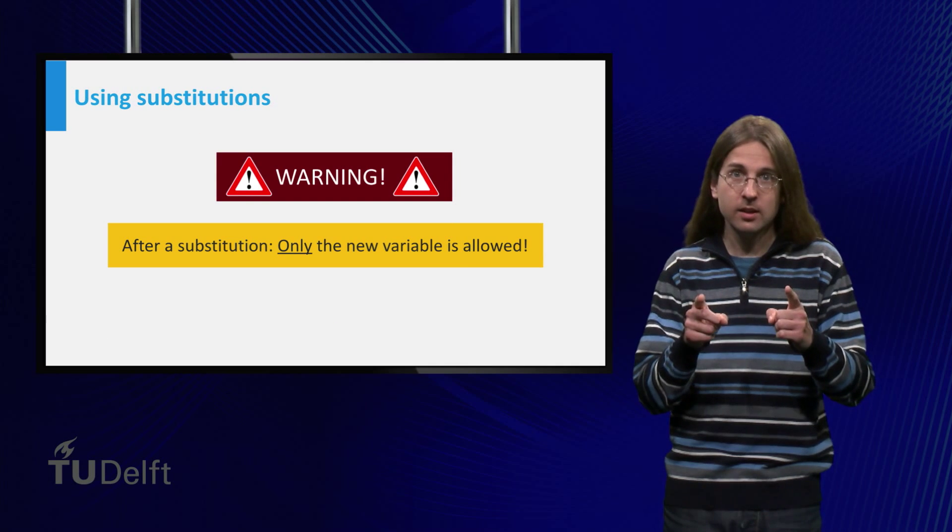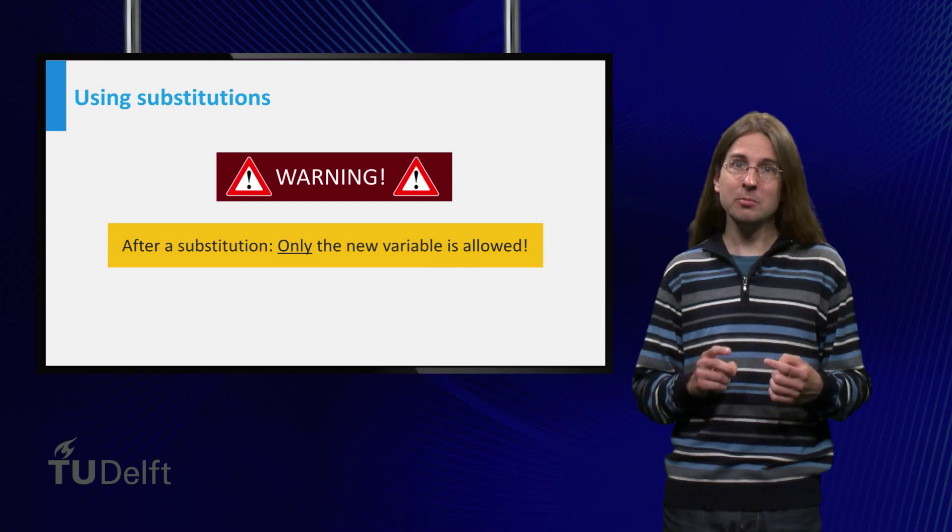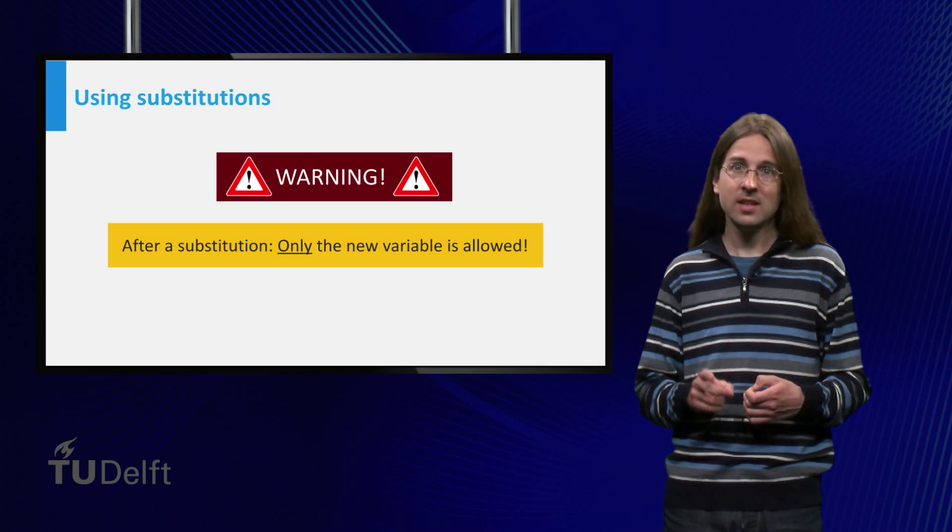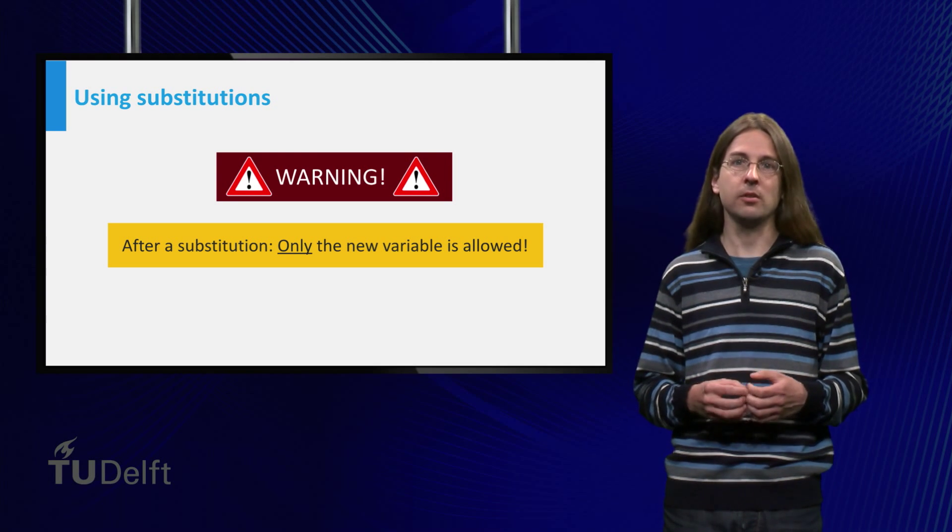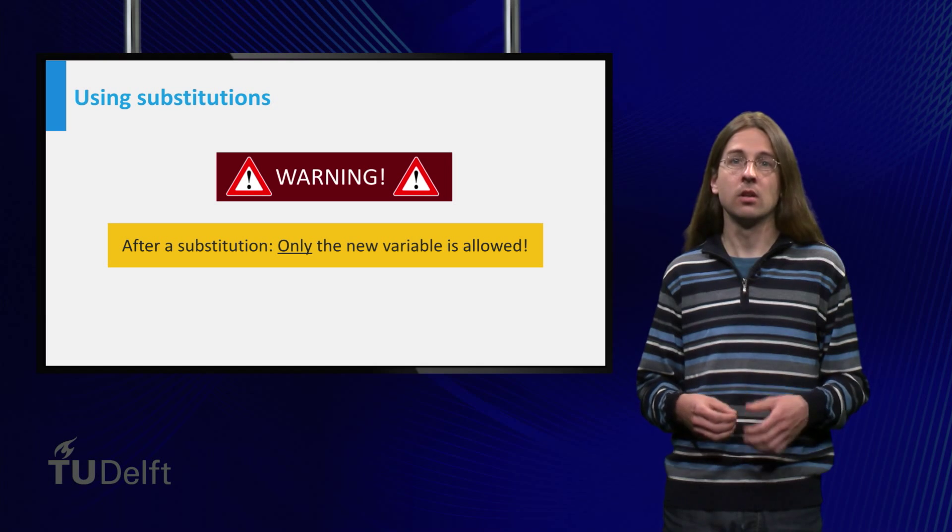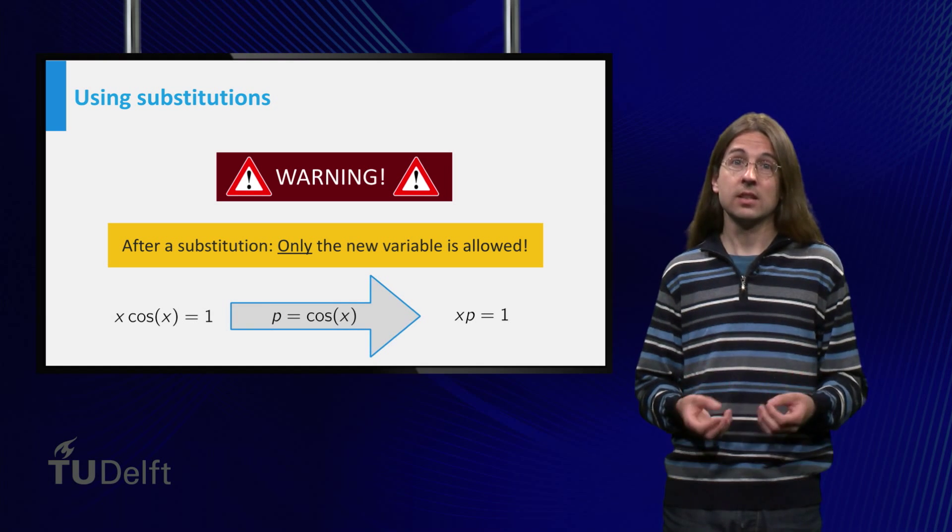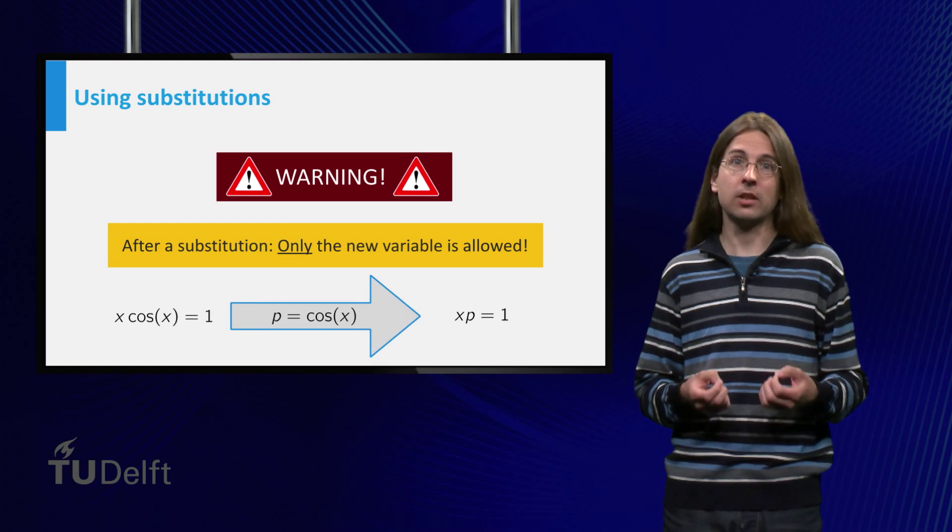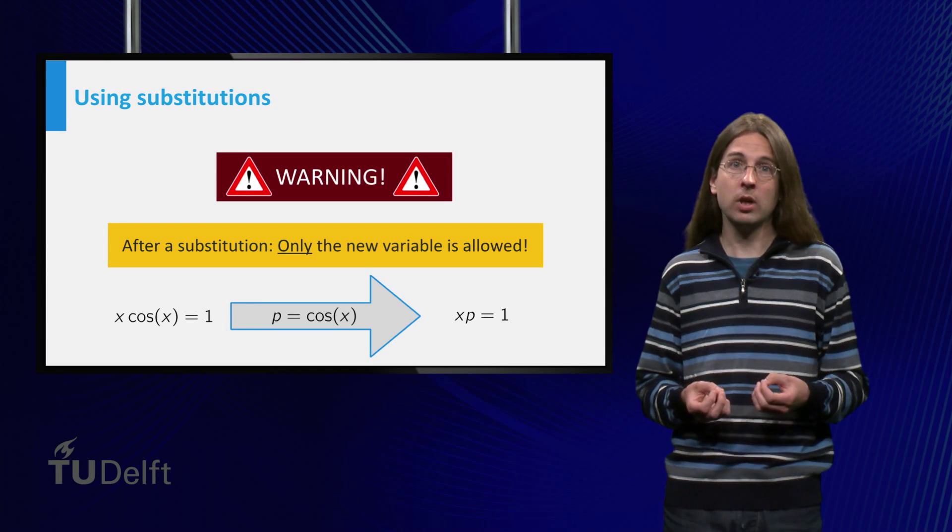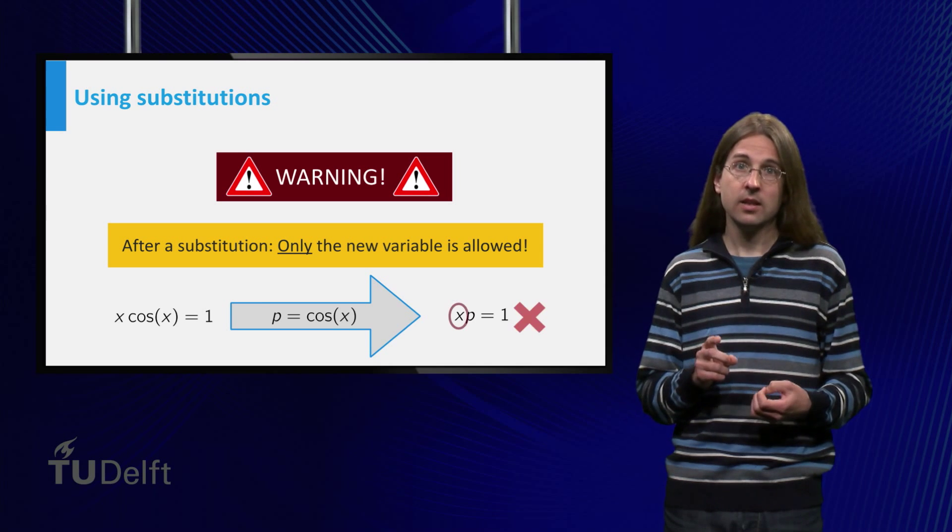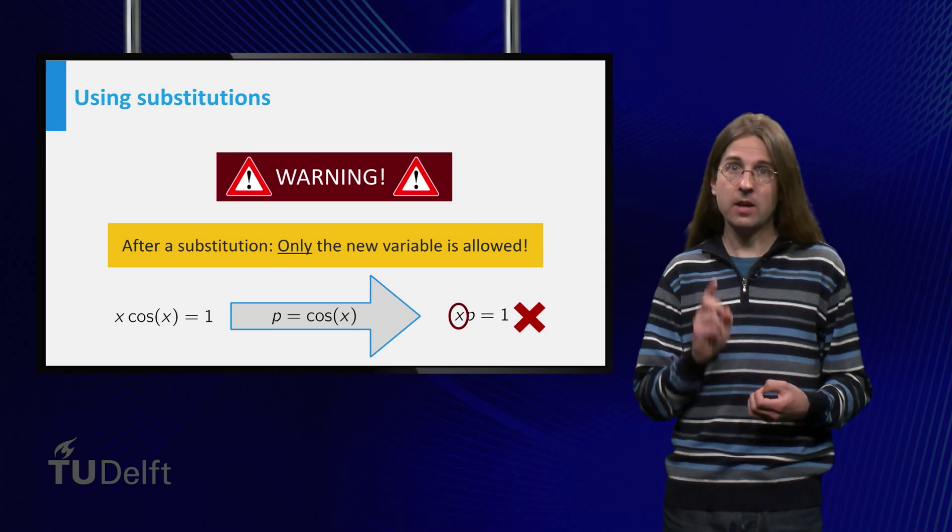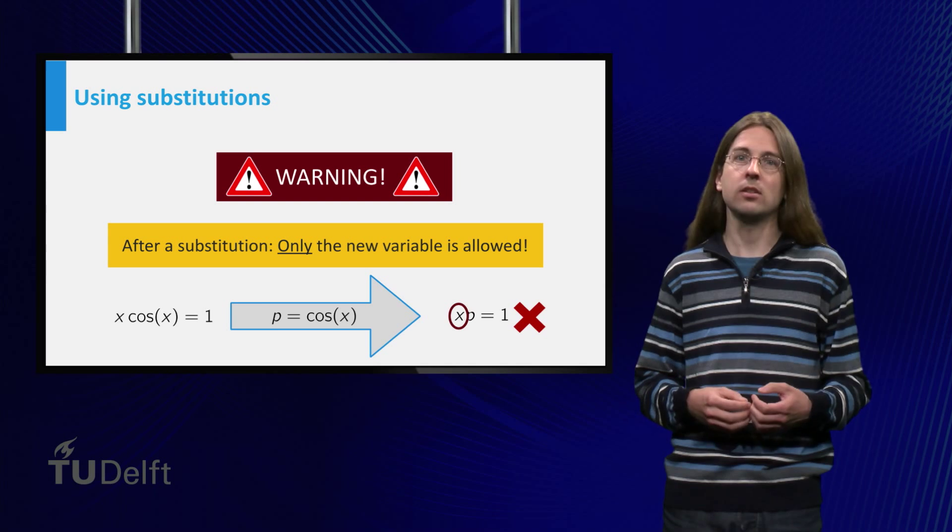Warning! If you want to use a substitution, a common mistake is to use a substitution that leaves some x's remaining in the resulting equation. For example, if we use p = cos(x) in the equation x·cos(x) = 1 to get x·p = 1, we have an x remaining. This must not happen. The final equation should only contain the new variable.